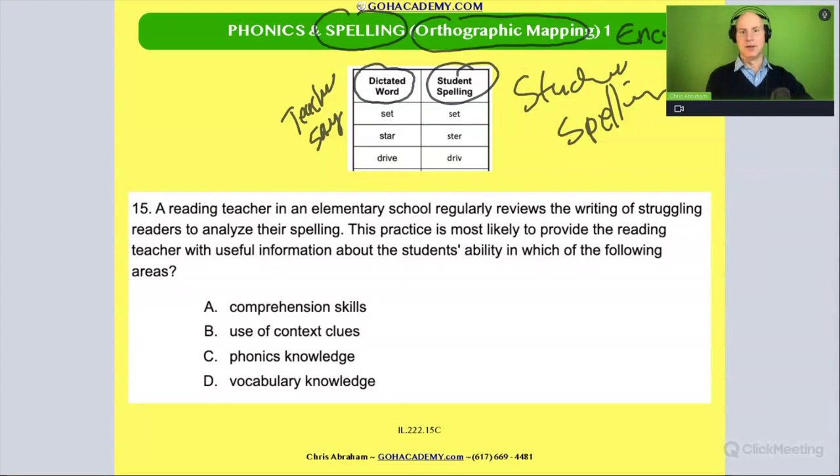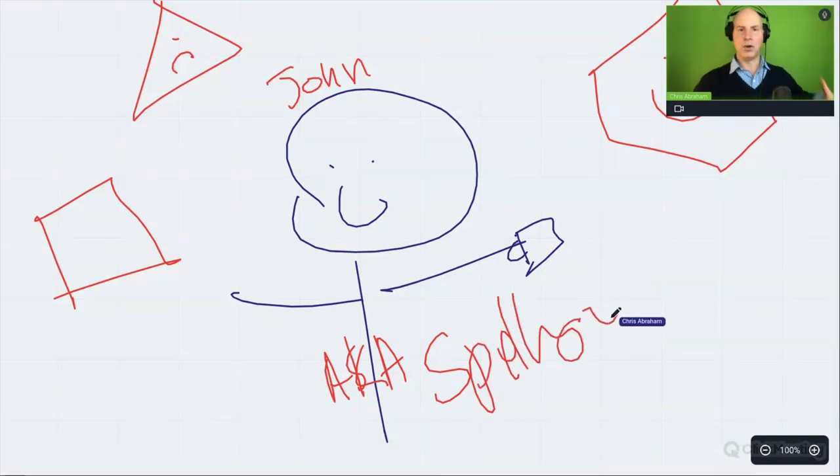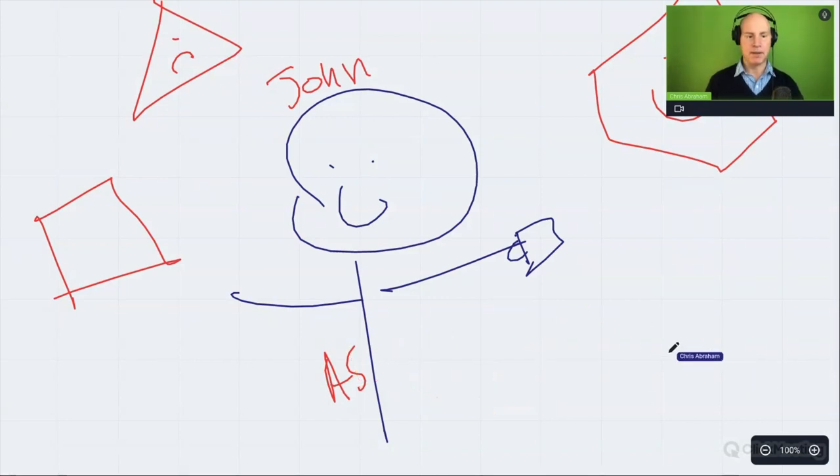Now, why don't they say spelling quiz? Why do they have to make it so fancy with orthographic mapping or encoding? I don't know why. The point is, if you do see this scenario, you recognize your friend. Your friend John, aka anything to do with in this case here spelling or encoding or orthographic mapping, right? They're all going to be your friend John.